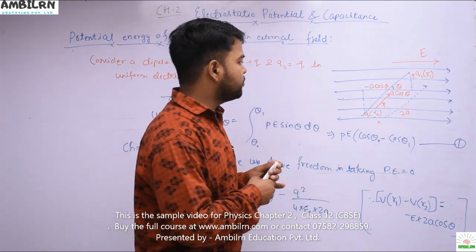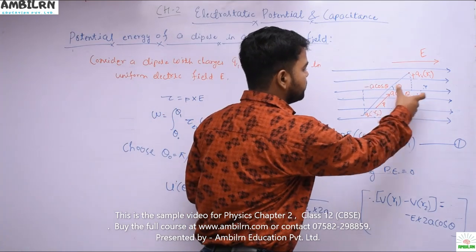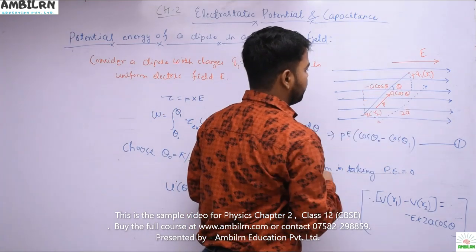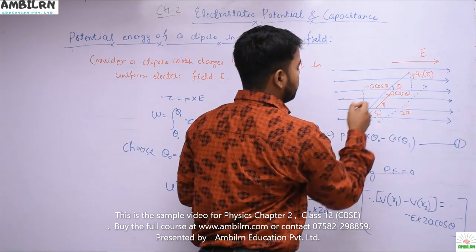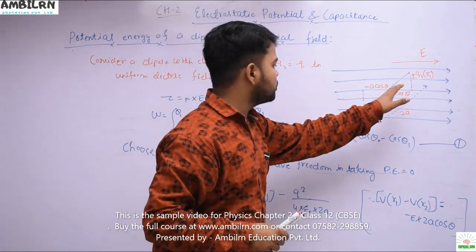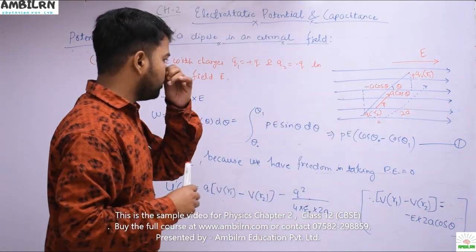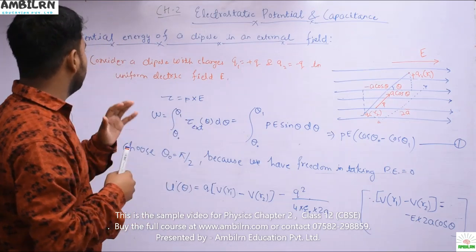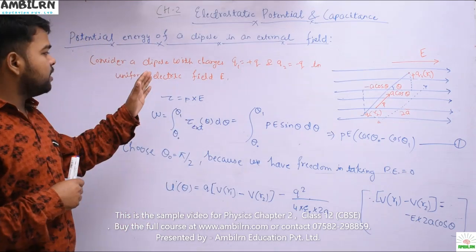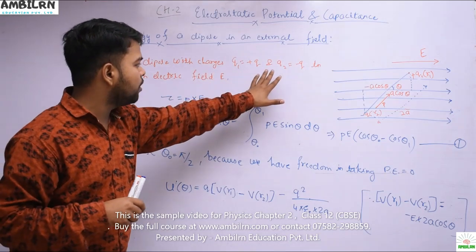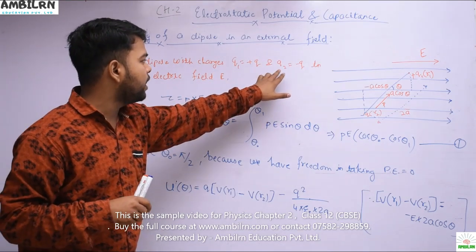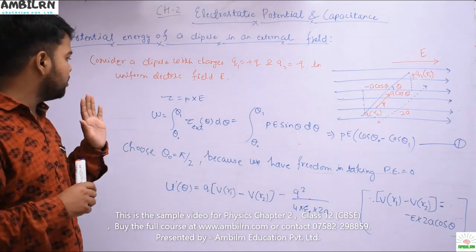And this is you can see the displacement from this center, this is minus a cos theta. I'm telling you later on, but you just see that we have considered a dipole having charges q1 equals to plus q and q equals to minus q in the external field.